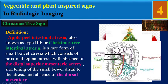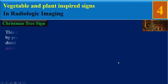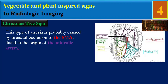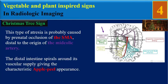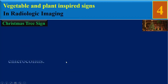This includes shortening of the small bowel distal to the atresia and an absence of dorsal mesentery. This type of atresia is probably caused by in utero occlusion of the superior mesenteric artery distal to the origin of the middle colic artery. The distal intestine spirals around its vascular supply, giving the characteristic apple tree appearance.